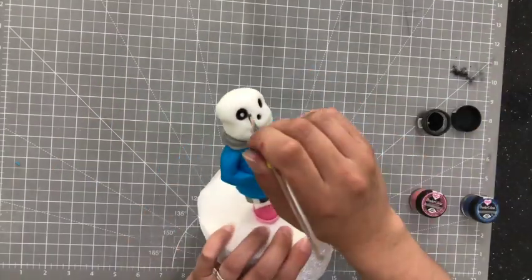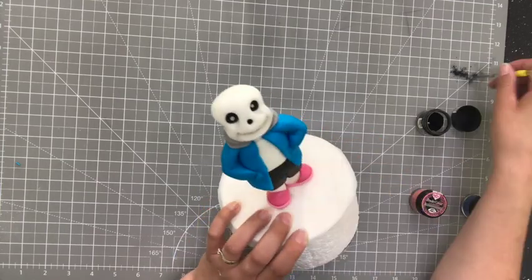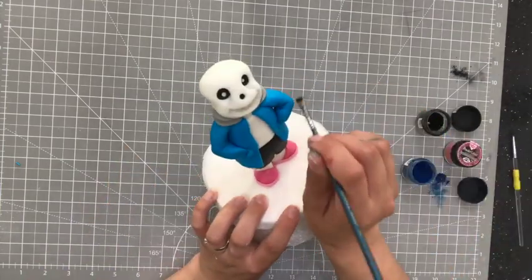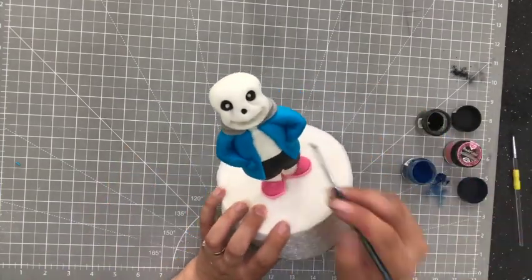And then finally, I just go over him with some dry rainbow dust. This just helps to give him a little bit more depth. Especially on his face, it will help bring out those features.